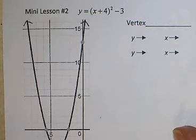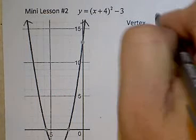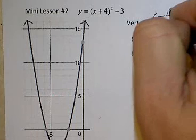Our last one. I forgot to do the vertex of the last one. The vertex of the last problem was positive 4, positive 1. Okay, vertex for this problem is going to be (-4, -3).